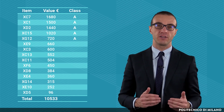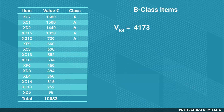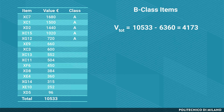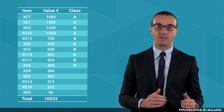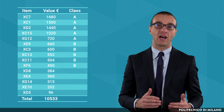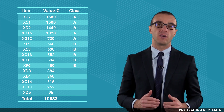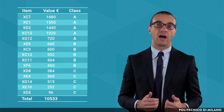Then we apply the same method to the remaining items. We have an accumulated value of €4,173, given by the difference between the total value, €10,533, and the accumulated value of the A class items, €6,360. The average value is then the ratio between the total remaining value, €4,173, and the number of remaining items, 10. Thus, all items whose value is higher than €417 are B class items — so another five items are assigned to B class. In the end, the remaining five items are allocated to C class.